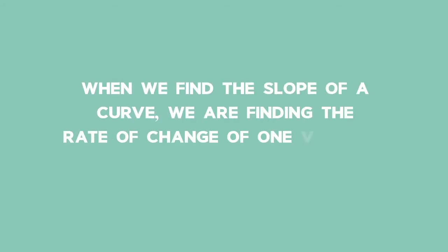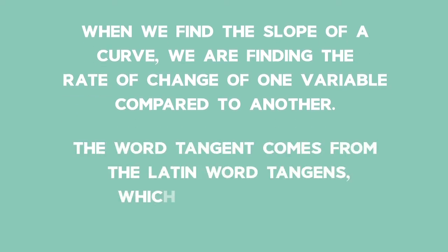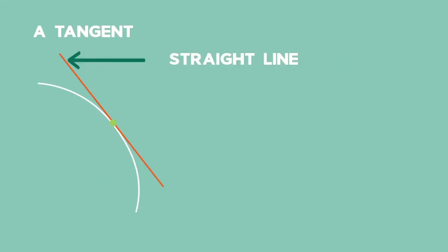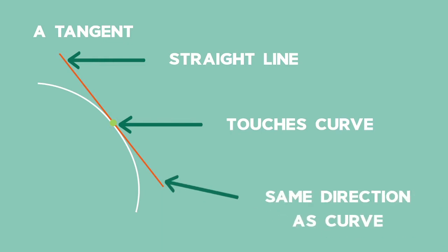When we find the slope of a curve we are finding the rate of change of one variable compared to another. The word tangent comes from the Latin word tangens, which means touching. Hence a tangent to a curve is a straight line that touches the curve. A tangent line must have the same direction as the curve at the point of contact.